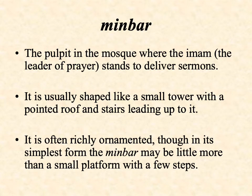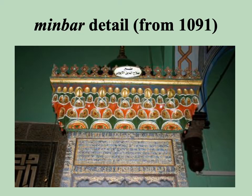Another common feature in a mosque is the minbar, which is effectively the pulpit — just as you would find in a church. The pulpit is where the priest would stand; the minbar is where the imam would stand to lead the prayer and deliver sermons. Usually it's pretty ornate — like a small tower with a pointed roof and stairs leading up to it, very often richly ornamented and elegant. Here we see the details of a minbar dating from 1091, and you can see it's actually quite beautiful.